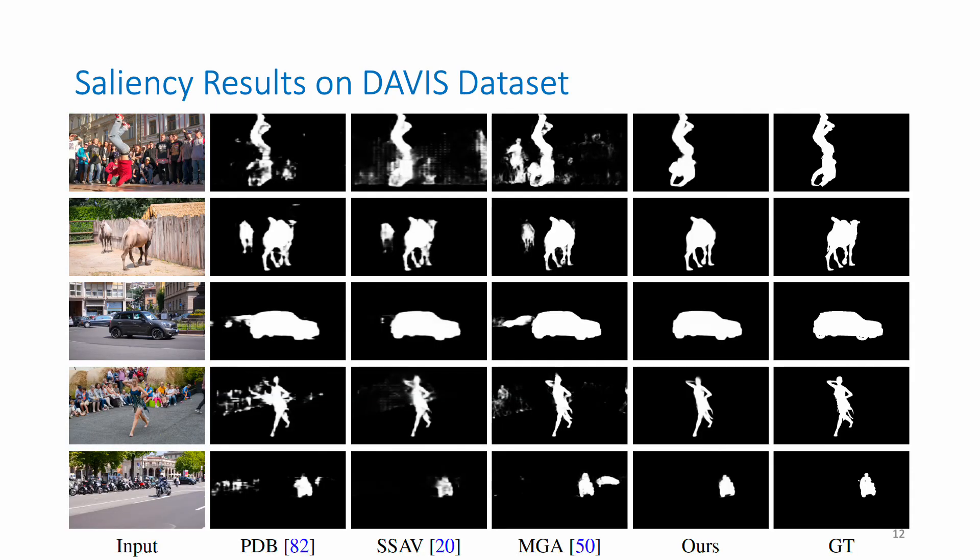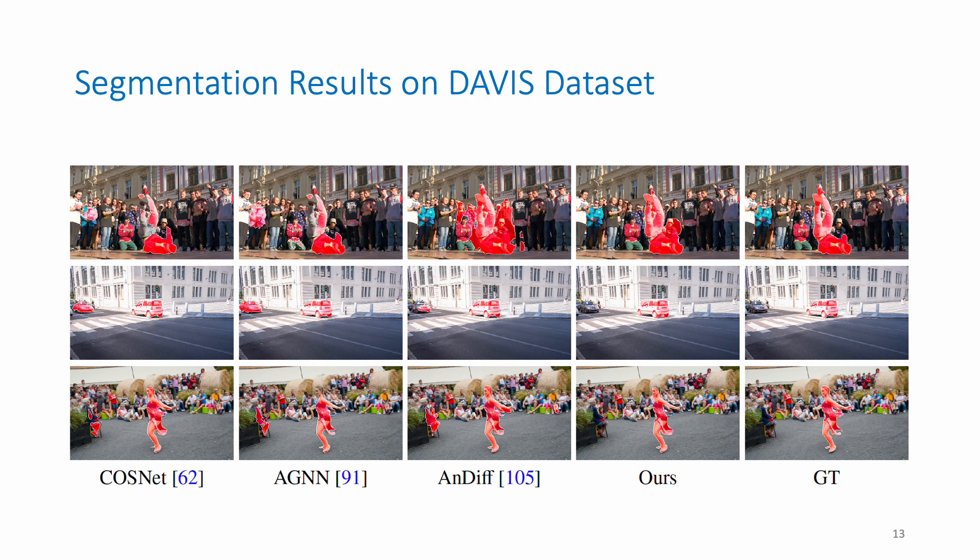Here are some sample results of salient detection on the DAVIS dataset. The results by our method are more accurate and contain more details. We also show the segmentation results on the DAVIS dataset.